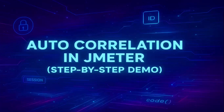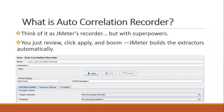By the end of this video you will never look at correlation the same way again. Think of the autocorrelation recorder as a JMeter recorder but with superpowers. Instead of you digging through the responses and manually writing regex or JSON extractors, the plugin actually watches your recording, detects the dynamic values, and suggests the correlation rules for you. Just review, click apply, and boom — JMeter builds the extractors automatically. That means less guesswork, fewer failed tests, and way more time for the fun stuff.